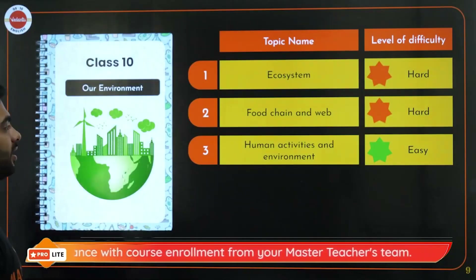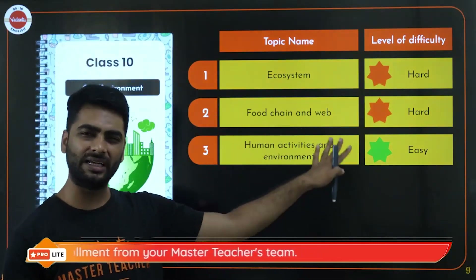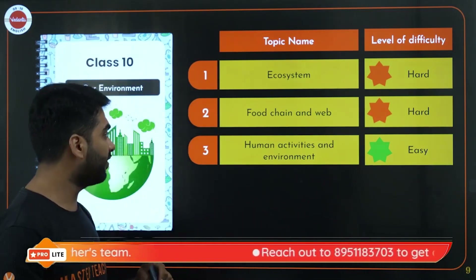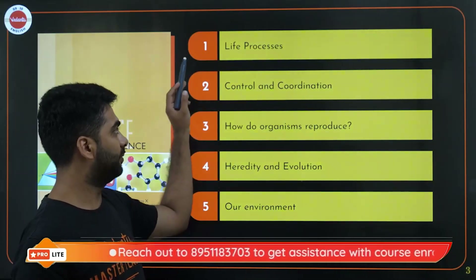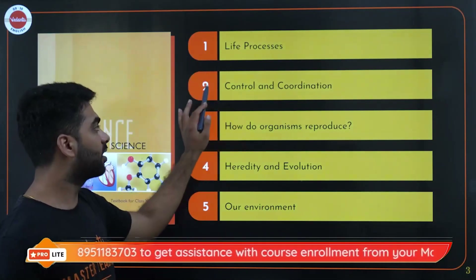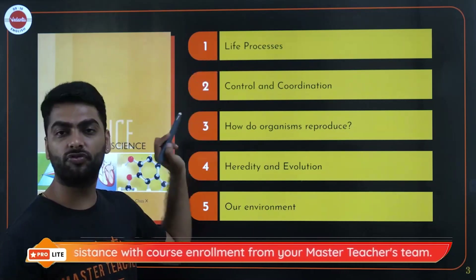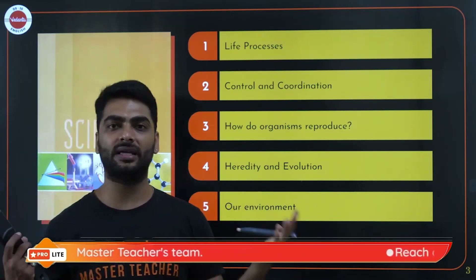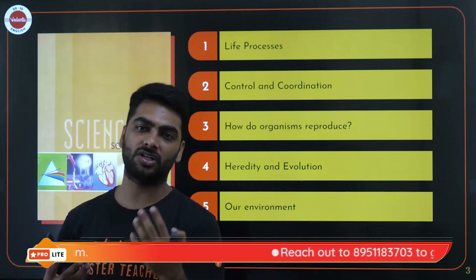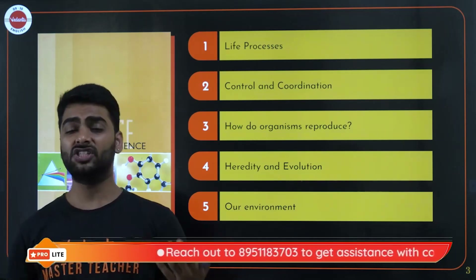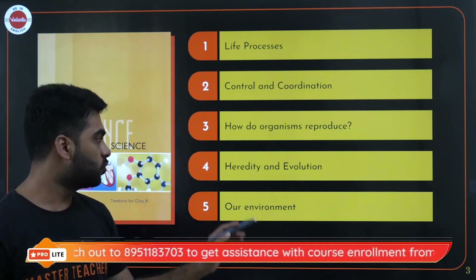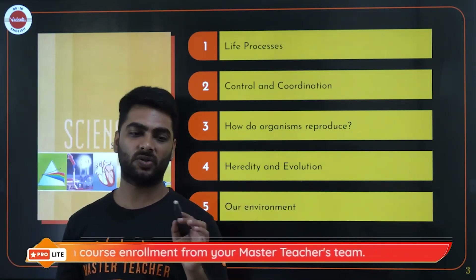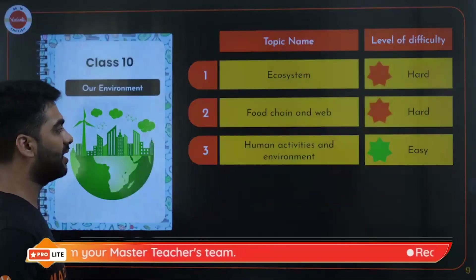In Our Environment, the ecosystem, food chain, and food web are medium difficulty, while human activities and the environment is quite easy. Out of all five chapters, give maximum time to Life Processes, Control and Coordination, and Reproduction first. Then do Heredity and Evolution — it's completely conceptual and virtual. Keep Our Environment for last since it's the easiest to score.